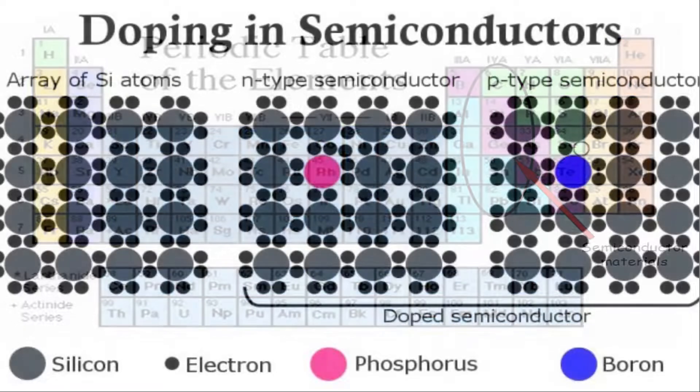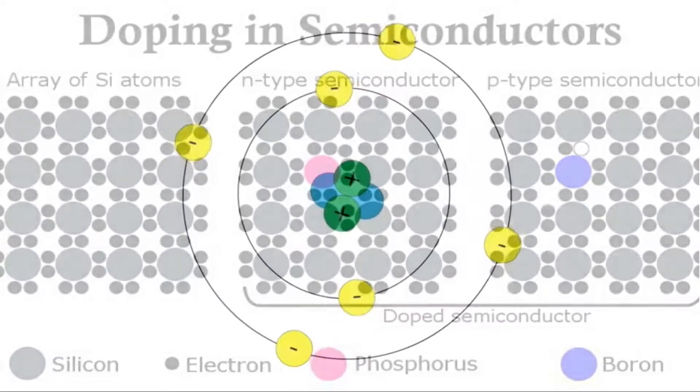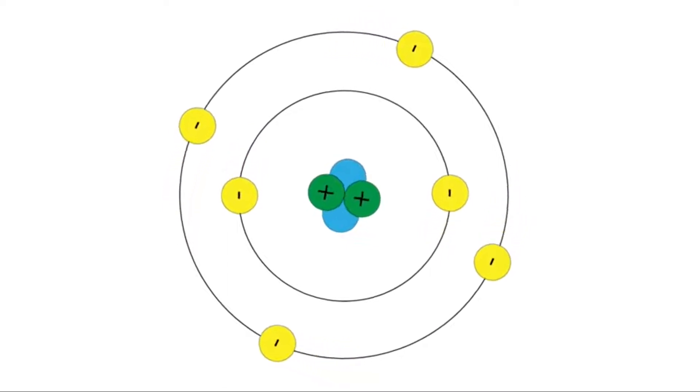Doping is the process where small amounts of impurities are added to pure semiconductors causing large changes in electrical conductivity. The electrons in every atom reside and continuously rotate around the nucleus in valence shells.